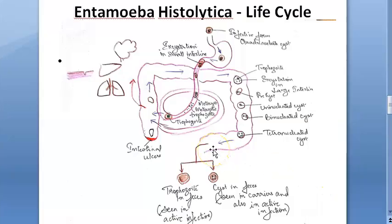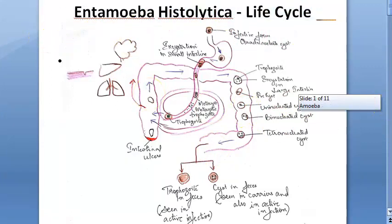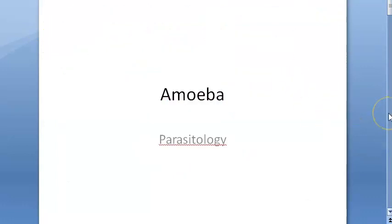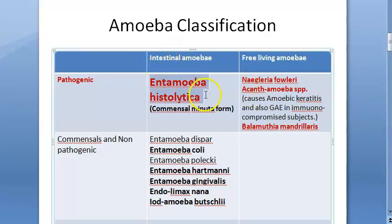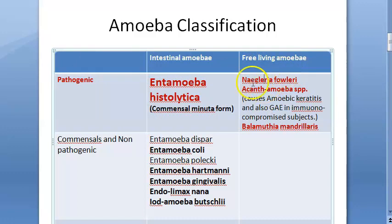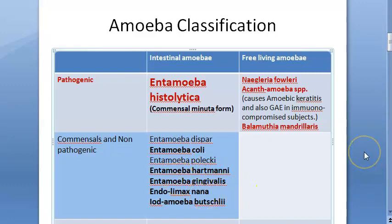Hello, in this video we want to look at the life cycle of Entamoeba histolytica. We started with amoeba parasitology — what amoeba are, and the many types. Entamoeba histolytica is the most important one; it is a commensal which can become pathogenic. There are other pathogenic amoeba like Naegleria fowleri, Acanthamoeba species, and Balamuthia mandrillaris, as well as non-pathogenic commensals.